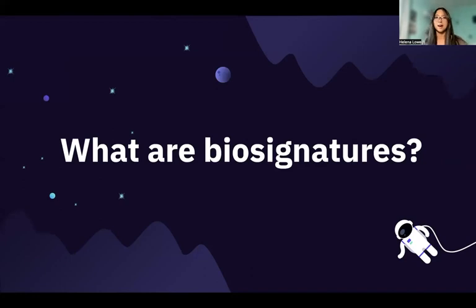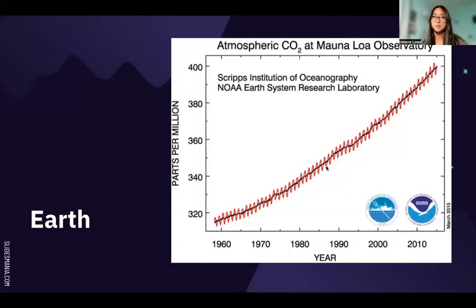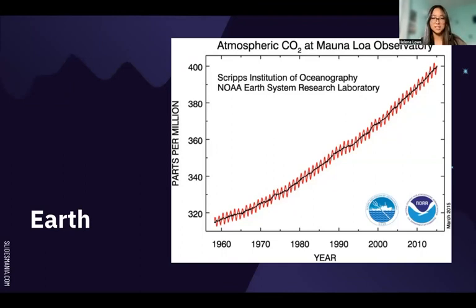Now, a little bit about the specific entry I was working on called Seasonality of Atmosphere Composition. On Earth, our atmosphere's carbon dioxide levels vary seasonally, as seen with the Keeling Curve. As you can see in this graph, there are seasonal rises and dips in carbon dioxide.